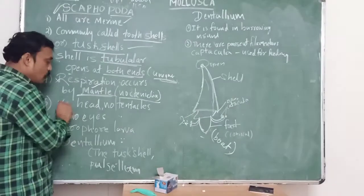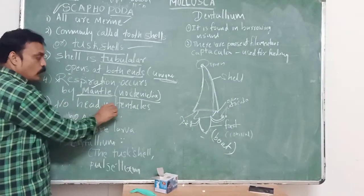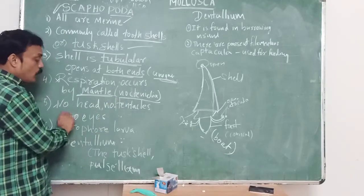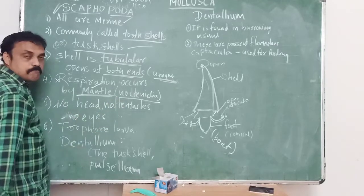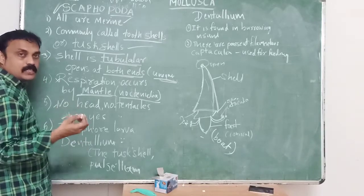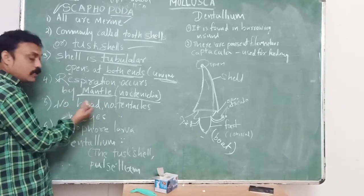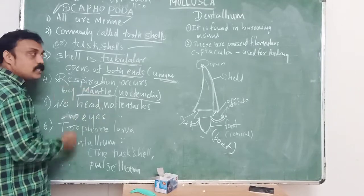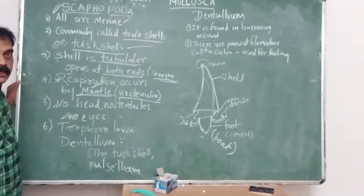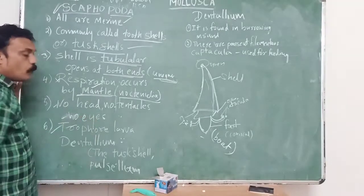In Scaphopoda, there is no distinct head, no tentacles, and no eyes. The larva is a trochophore larva.